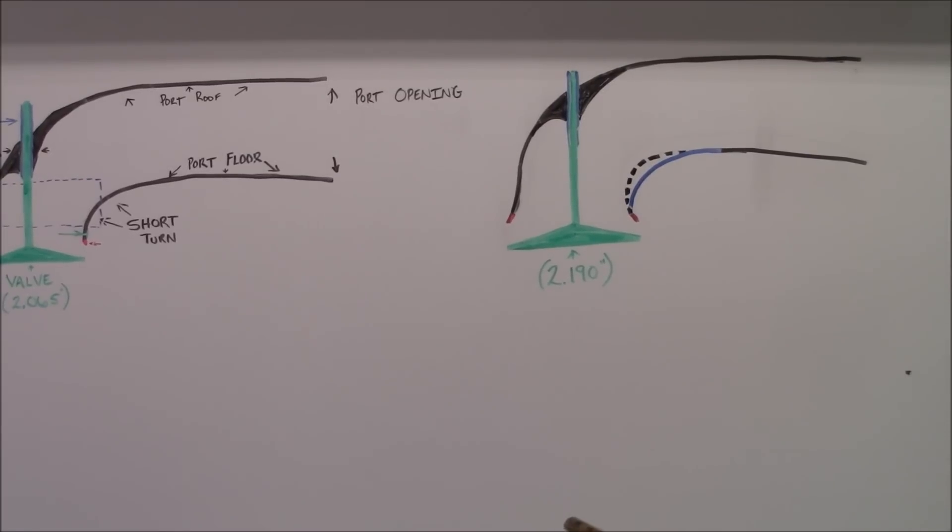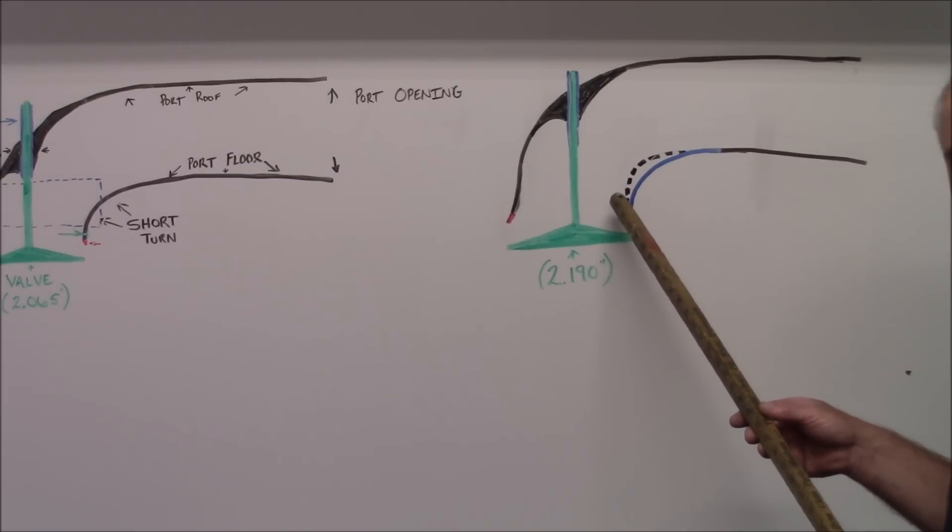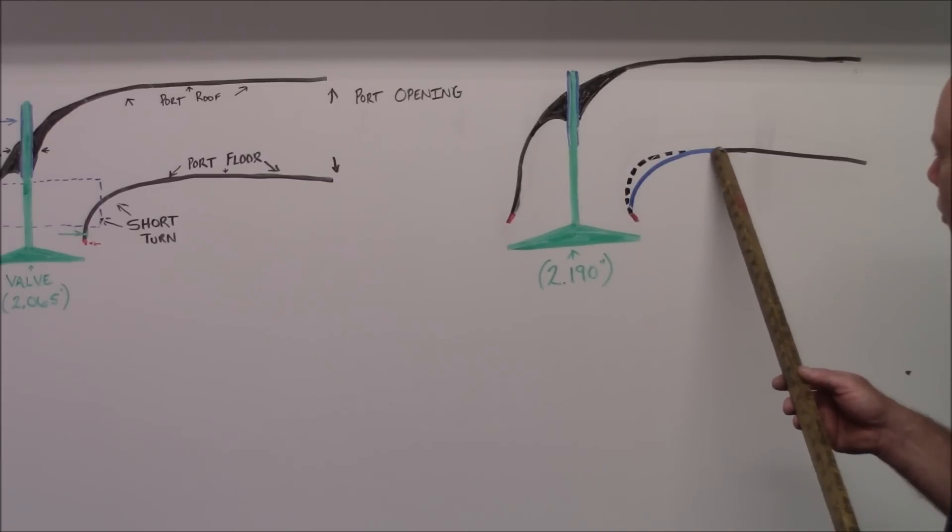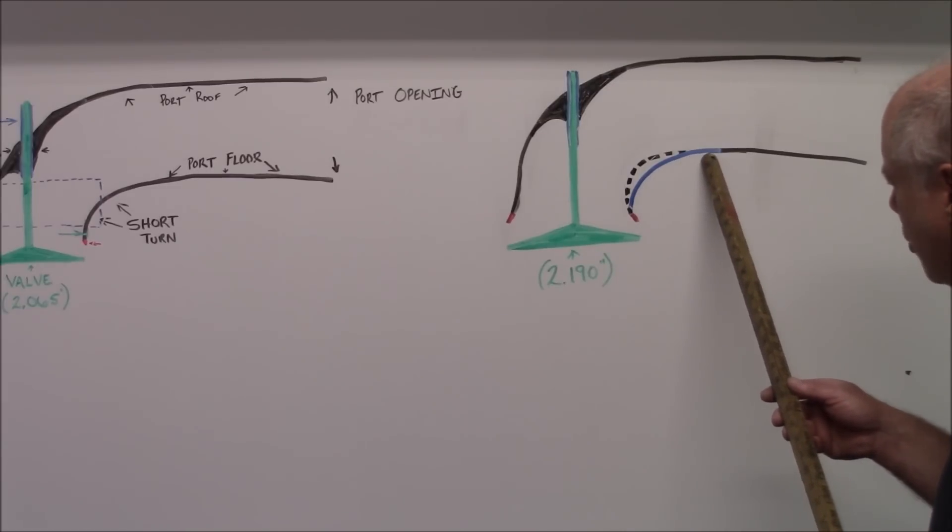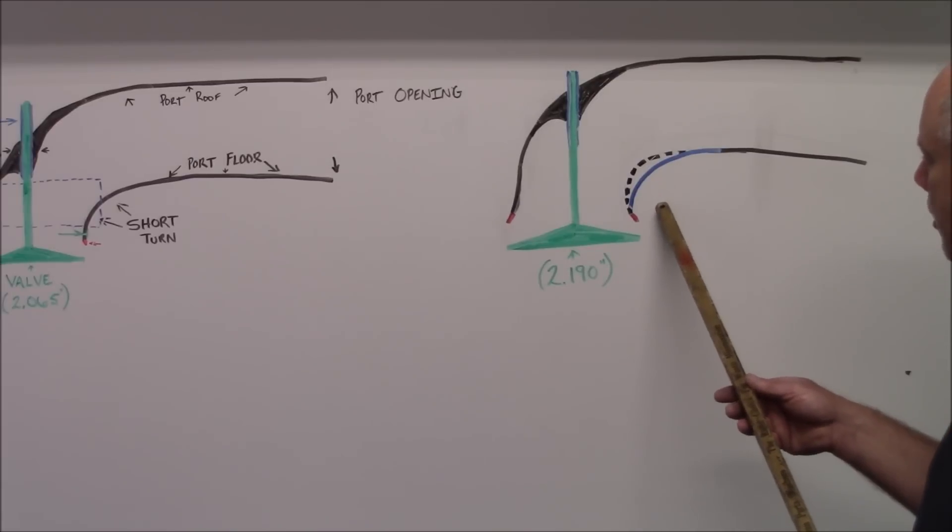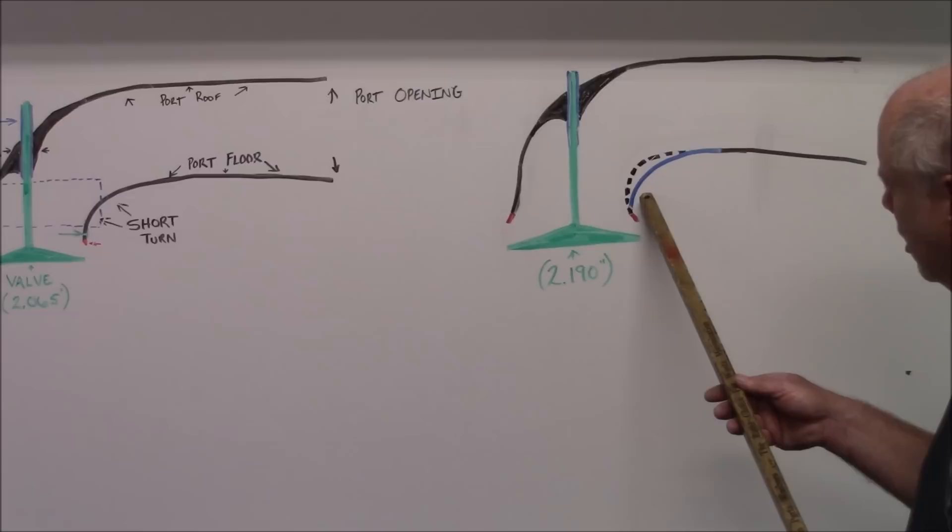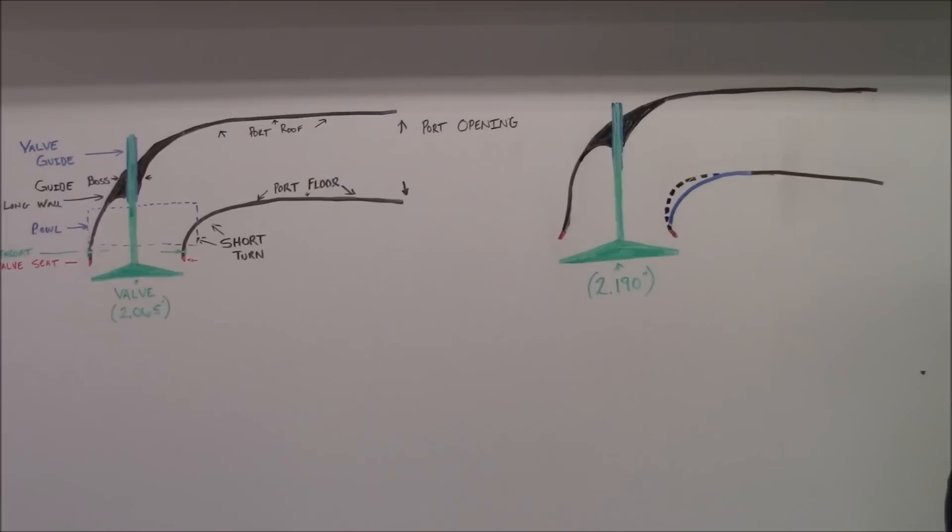So, this again was our factory, this black dotted line represented the factory short turn before we modified it. Roughly, crudely, this is where we laid the short turn back and re-profiled it by grinding on it. When we're porting the head, we'll be able to show you pictures of us doing this, but this is more of the shape that we're after, which will help this head continue to carry flow past 500 lift.